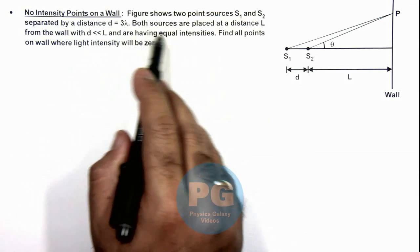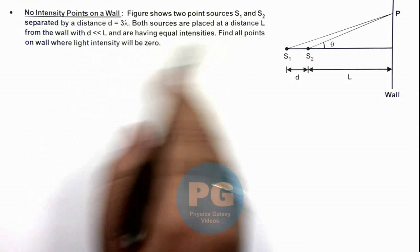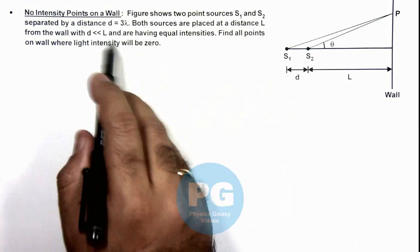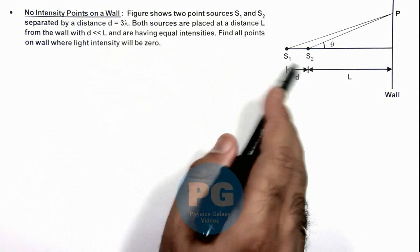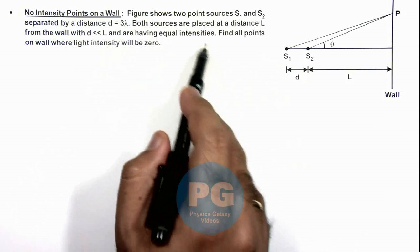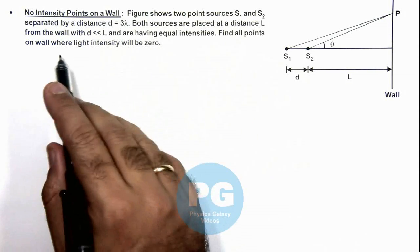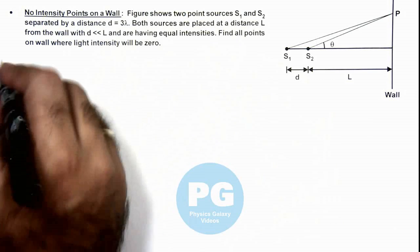Both sources are placed at a distance L from the wall with d very small compared to L and are having equal intensities. We are required to find all points on wall where light intensity will be zero.